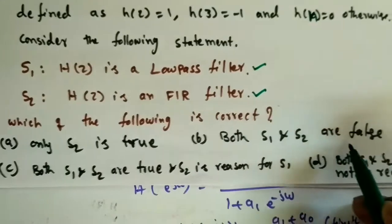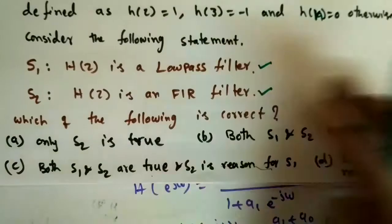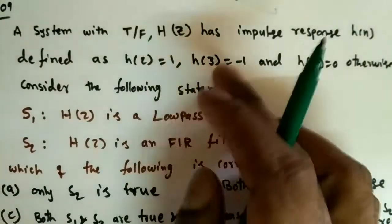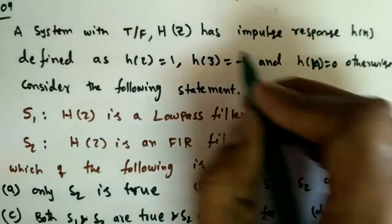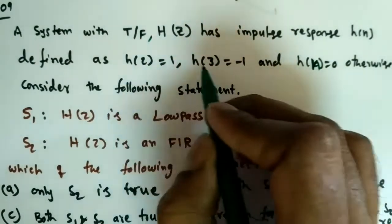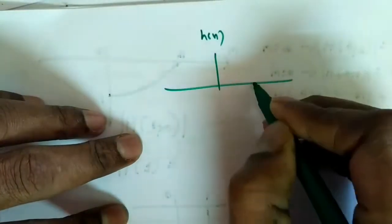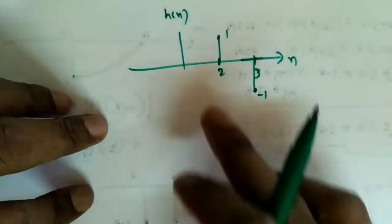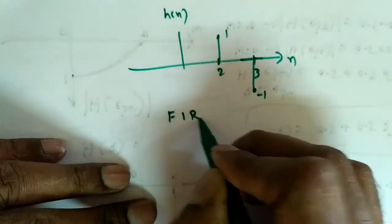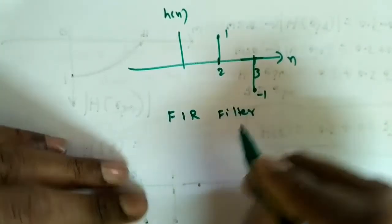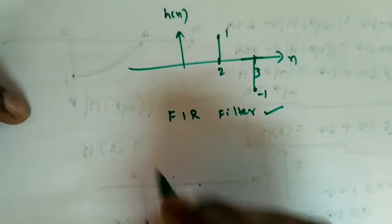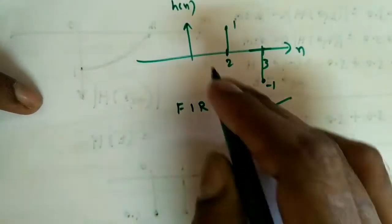The options are: only S2 is true; both S1 and S2 are false; both S1 and S2 are true and S2 is the reason for S1; or both S1 and S2 are true but S2 is not a reason for S1. Since we only get values at two finite intervals, h(n) is a finite sequence. Drawing h(n), we get values at n=2 (value 1) and n=3 (value -1). This is a finite sequence, so it is an FIR filter — statement S2 is correct.